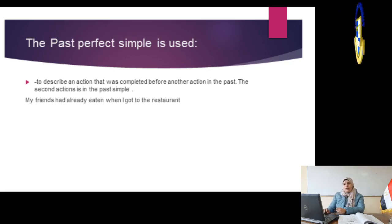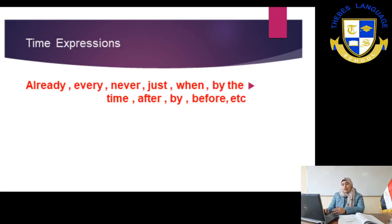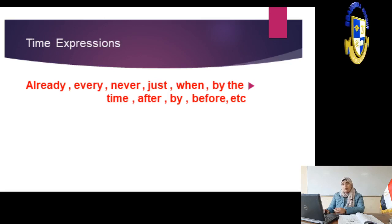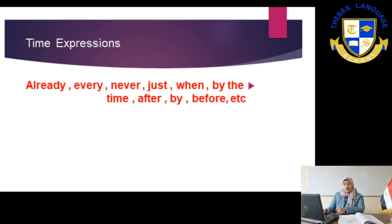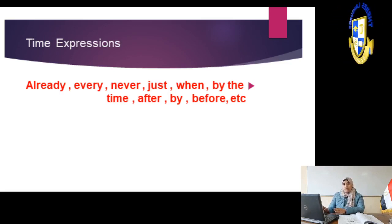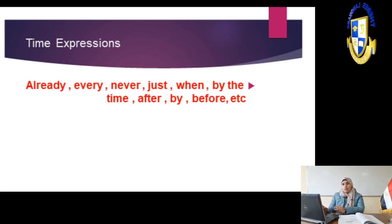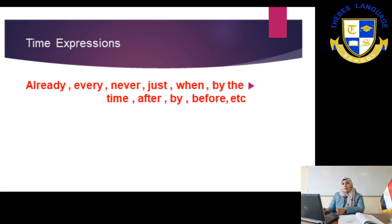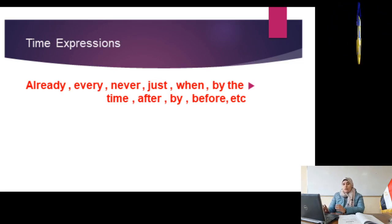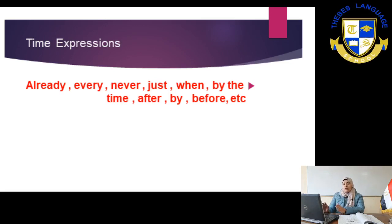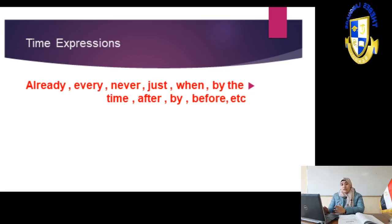As for the time expressions, we have many: already, every, never, just, when, by the time, after, by, before, and many others. But remember that these words are shared across many tenses. 'Already' is a keyword for the past perfect simple, but it can also be used in the past perfect progressive or the present perfect, depending on the meaning. 'Every' can be used in the present simple. So we have to think about the sentence before choosing a tense based on these keywords alone.